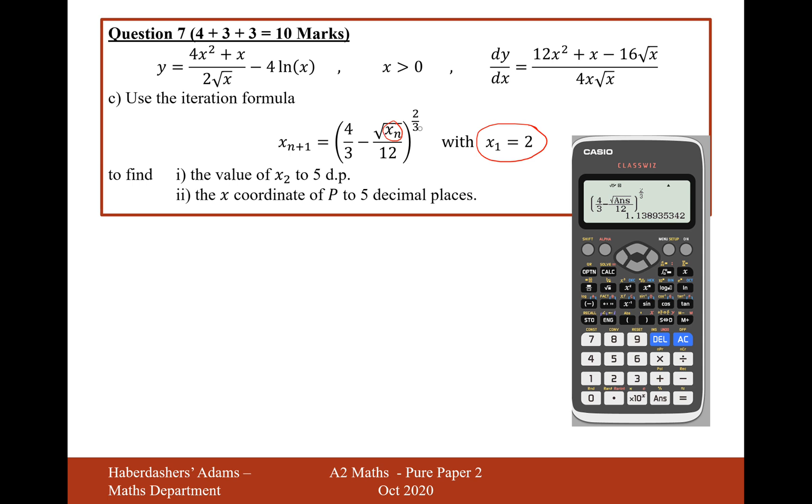So therefore x₂ is equal to 1.13894 to five decimal places. That's four at the moment, so it's going to be a four, because the five will round the three up to a four. So there we are, that's the answer for x₂.